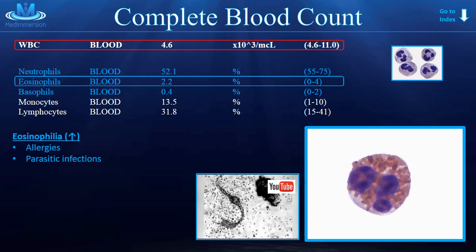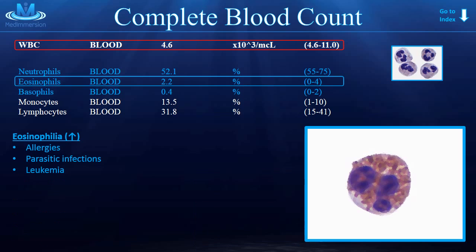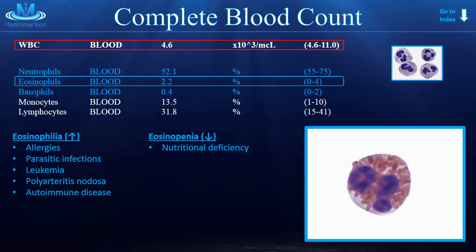What else might cause eosinophilia? You can't go wrong if you say leukemia, because certain types of leukemia could definitely increase the eosinophil count. Also, polyarteritis nodosa and some autoimmune disorders. What about eosinopenia, or a decrease in eosinophils? This gets a little bit tricky, because with eosinophils and basophils, technically 0% is still within normal range. So it's difficult to define an eosinopenia. However, if pressed, you could say a nutritional deficiency could decrease eosinophils, or excessive exposure to glucocorticoids could do it.